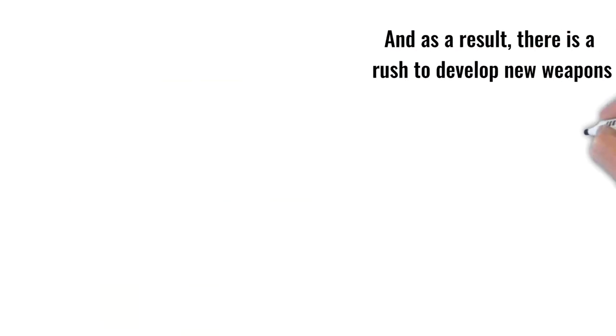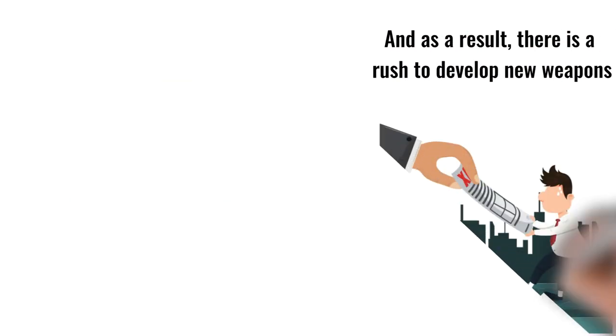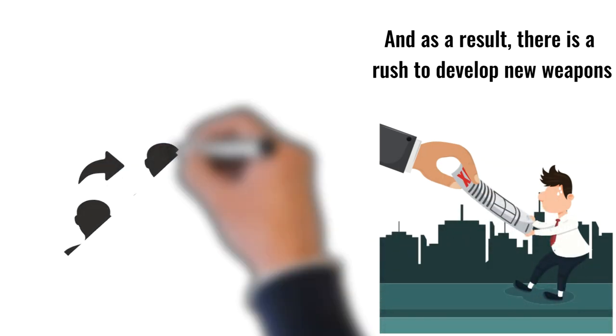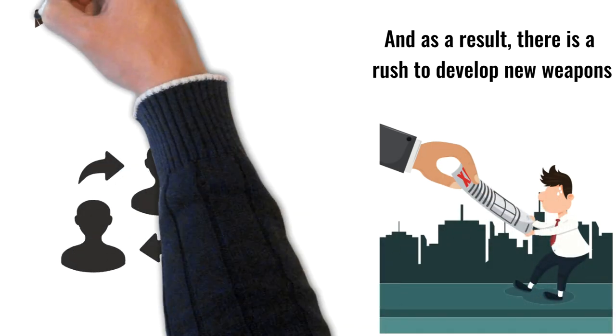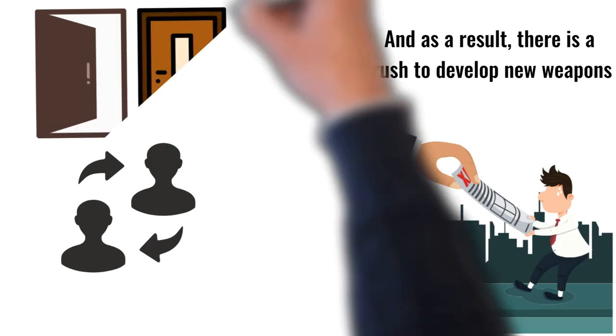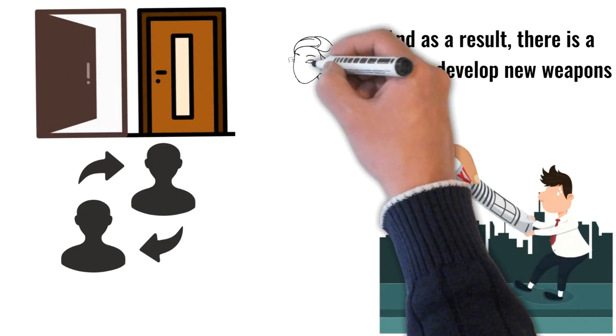And as a result, there is a rush to develop new weapons. One loophole has been closed by the federal government. You will have to track out a replacement. The government closes one door, and you choose to open another.